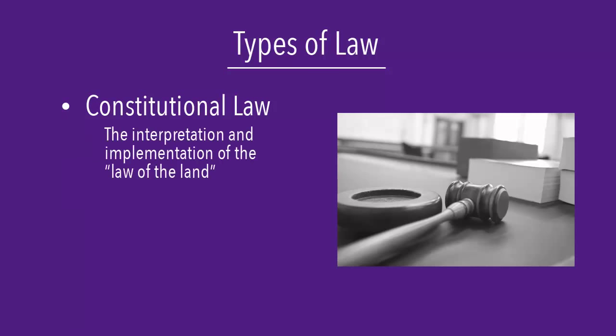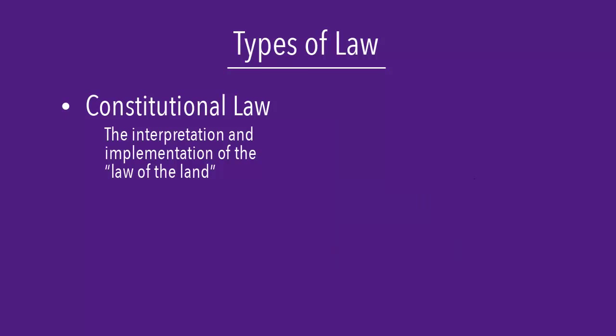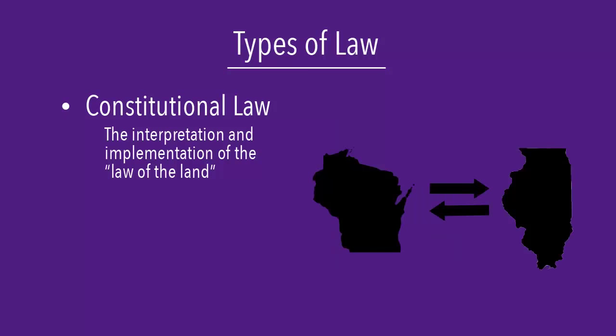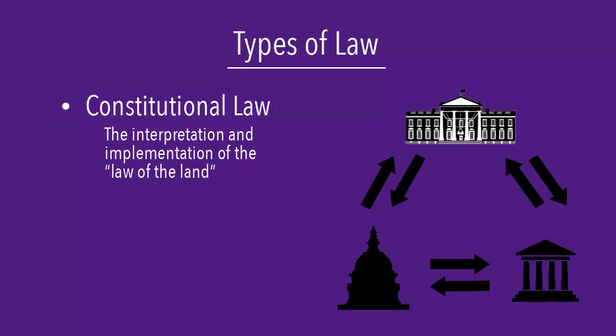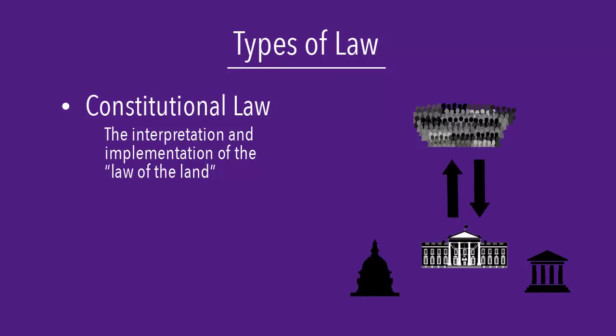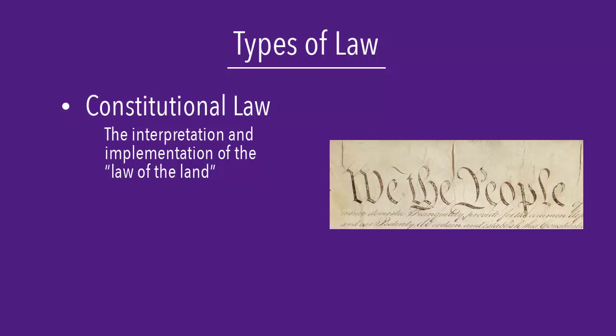Constitutional law deals with the interpretation and implementation of the so-called law of the land. This type of law deals with the relationships among individual states, the states and the federal government, the three branches of government, and individuals and the government. The publication associated with this type of law is the Constitution.